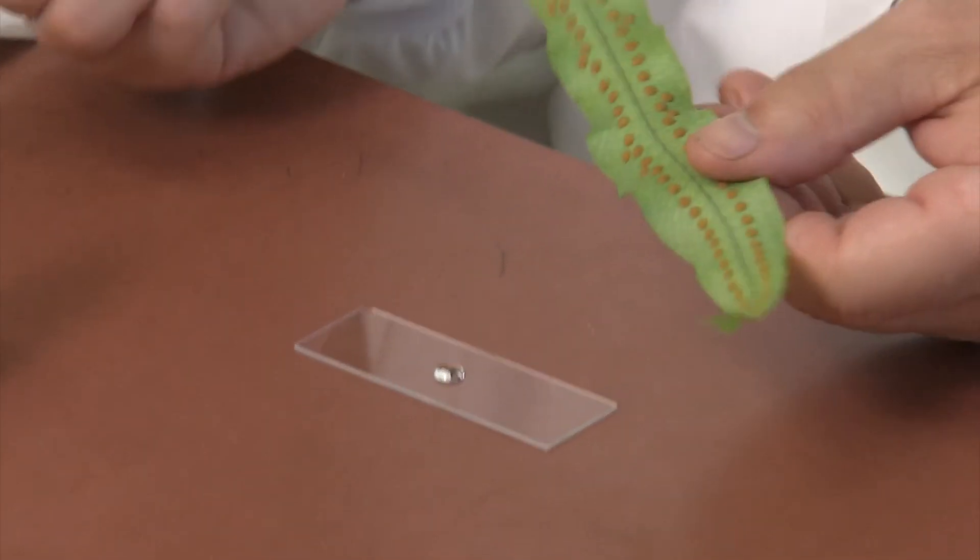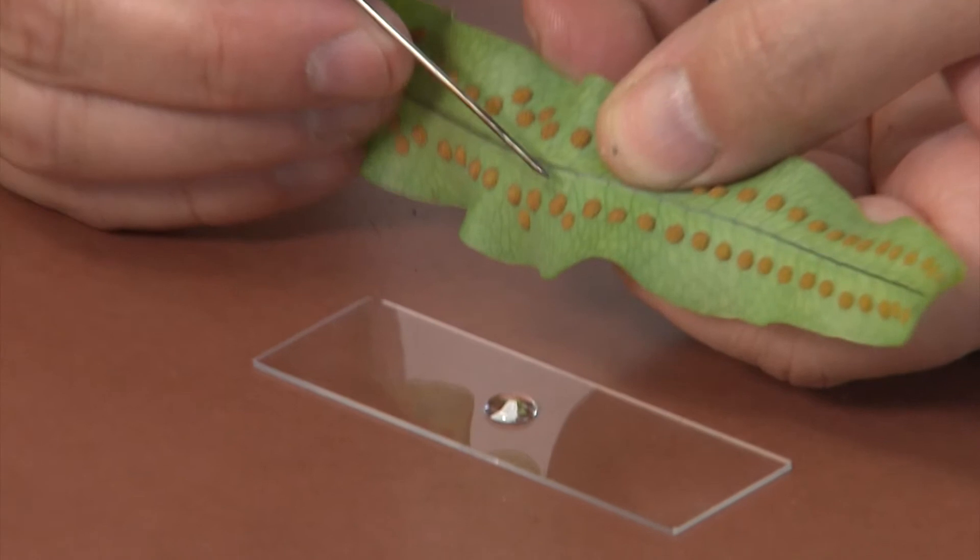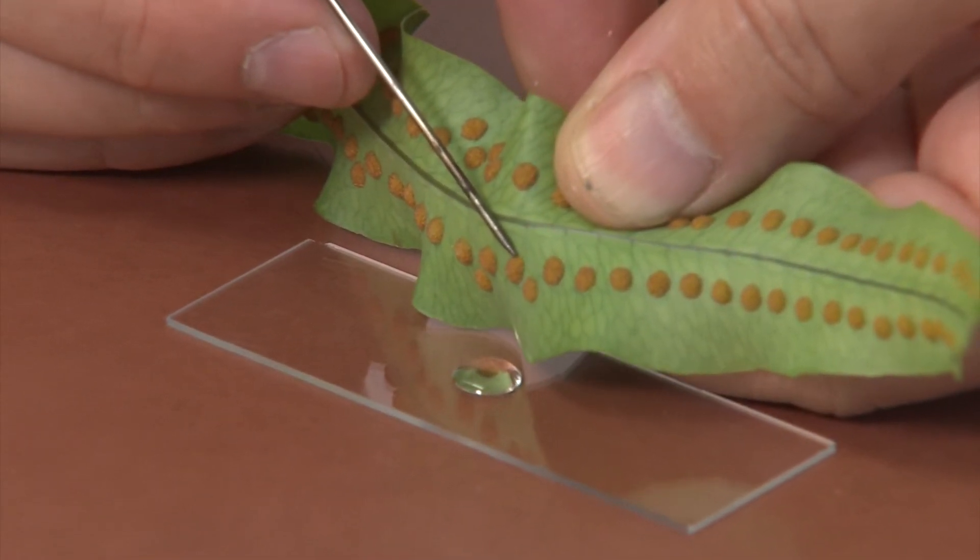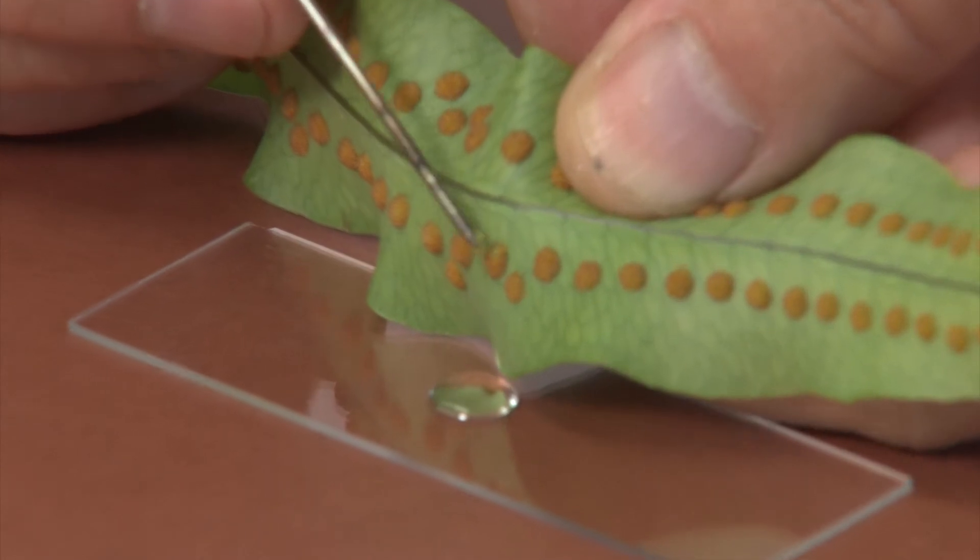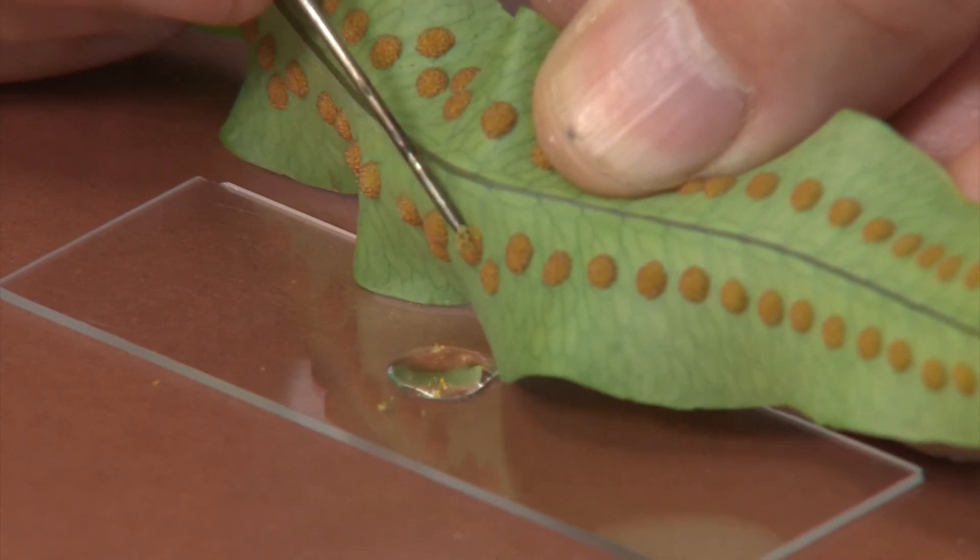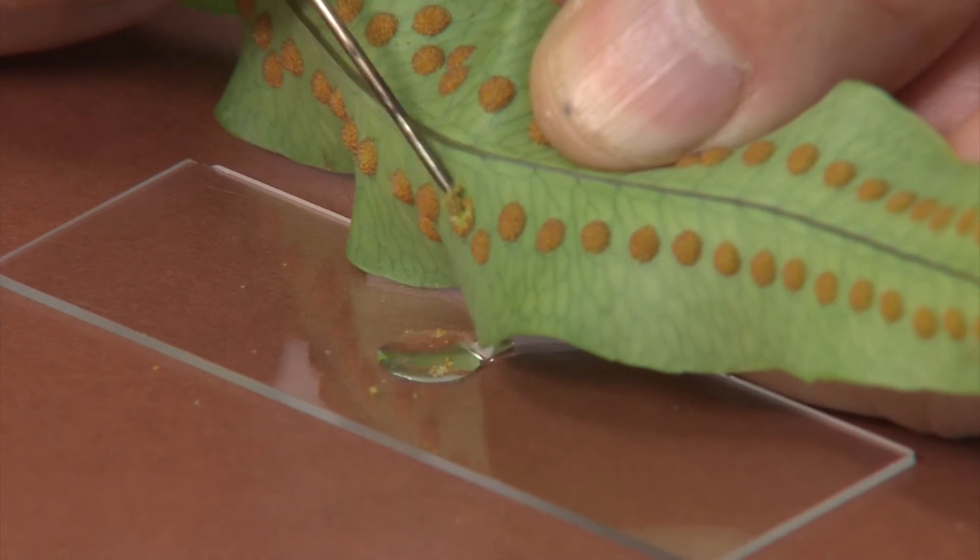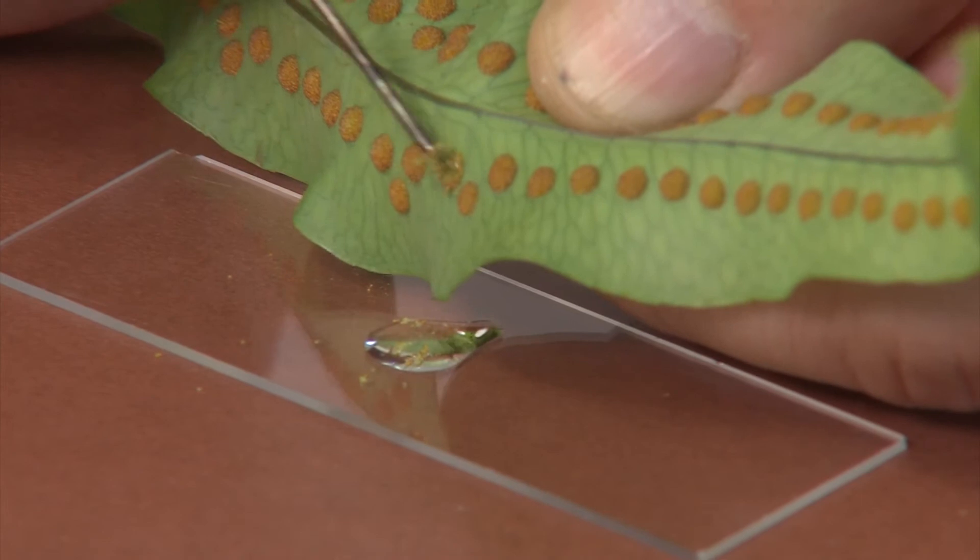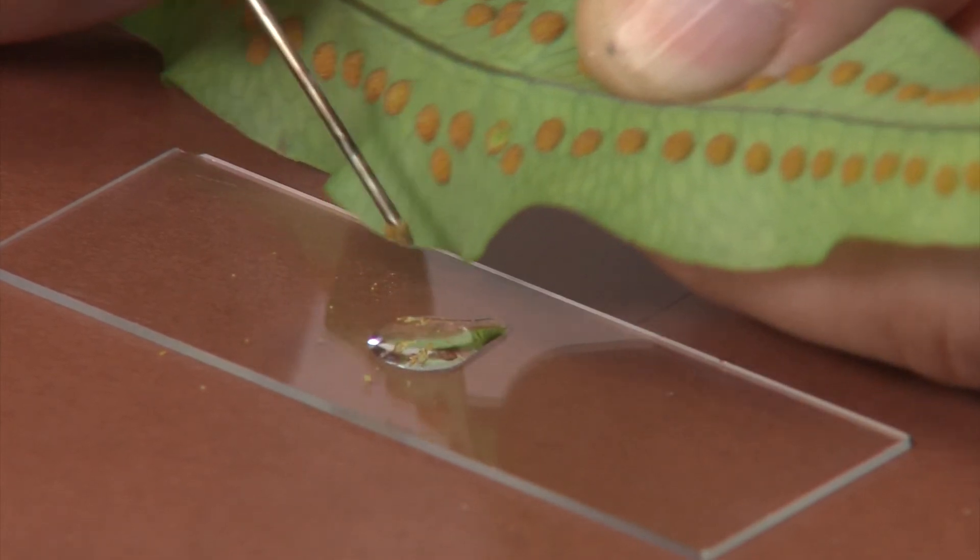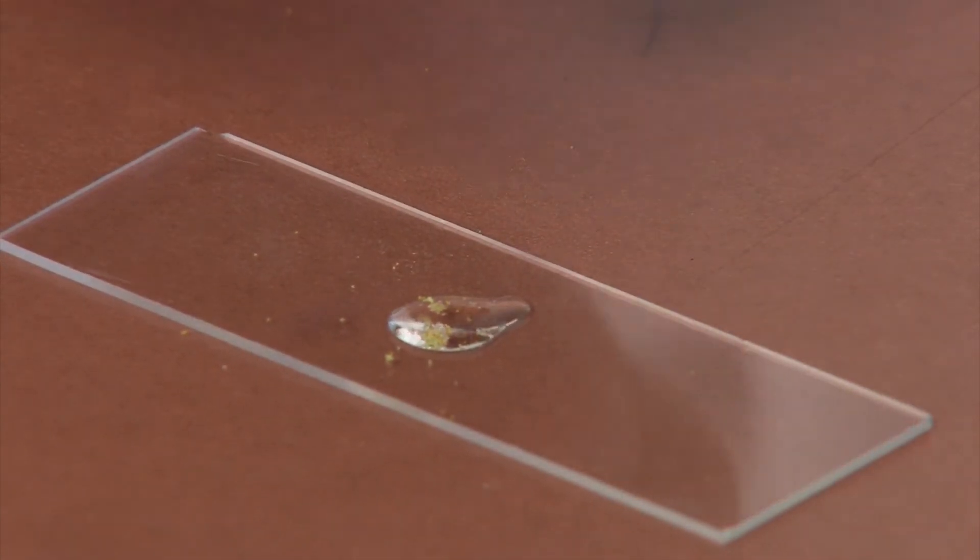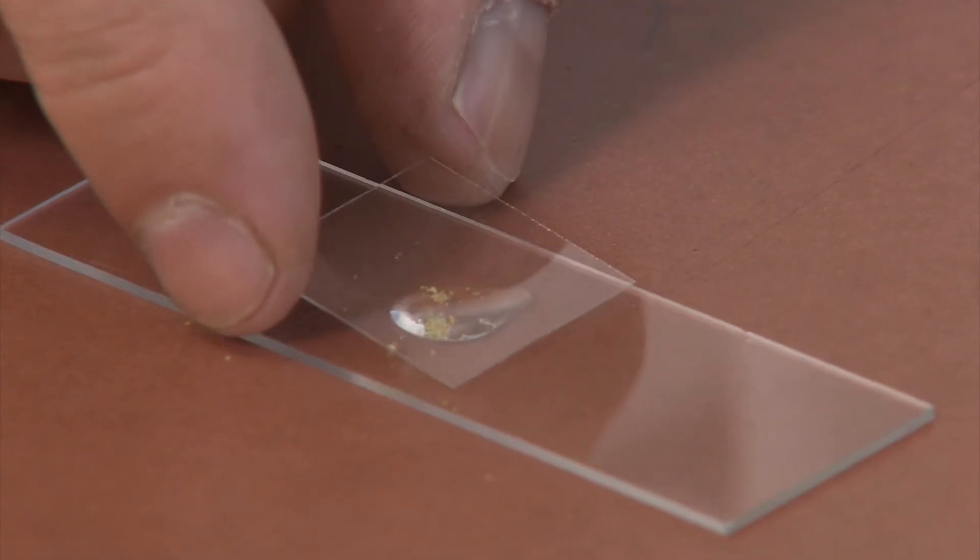Use the dissecting needle to scrape at a sorus so that the sporangia fall into the drop. Carefully apply a cover slip.